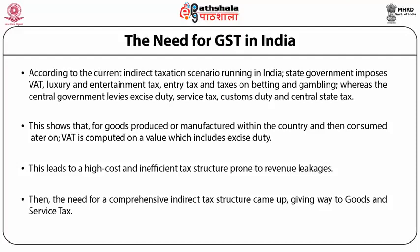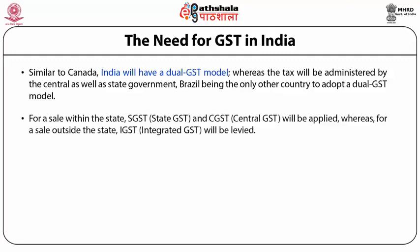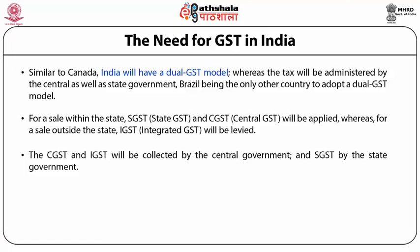The need for a comprehensive indirect tax structure gave way to Goods and Services Tax (GST). The government of India passed the long-overdue GST bill. Similar to Canada, India will have a dual GST model where the tax will be administered by the central as well as the state government, with Brazil being the only other country to adopt the dual GST model. For a sale within the state, State GST (S-GST) and Central GST (C-GST) will be applied, whereas for a sale outside the state, Integrated GST (I-GST) will be levied. The central GST and integrated GST will be collected by the central government and state GST by the state government.